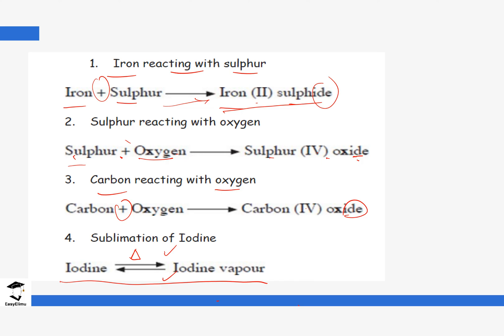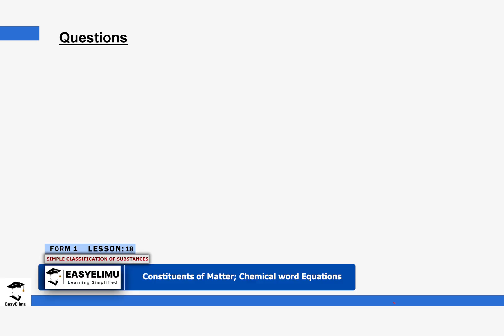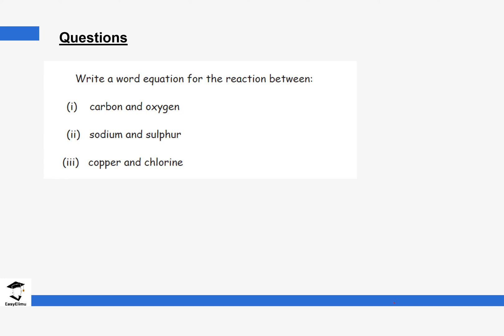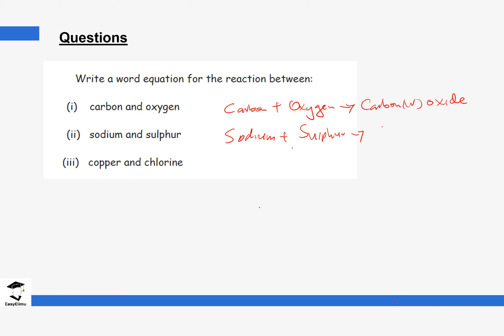Let's look at some questions. Write a word equation for the reaction between: carbon and oxygen, sodium and sulfur, and copper and chlorine. Starting with carbon and oxygen — these are two elements, so we know we will form a compound with an -ide: carbon plus oxygen forms carbon(IV) oxide. Sodium reacts with sulfur to form sodium sulfide, with an -ide ending, so sodium plus sulfur forms sodium sulfide.